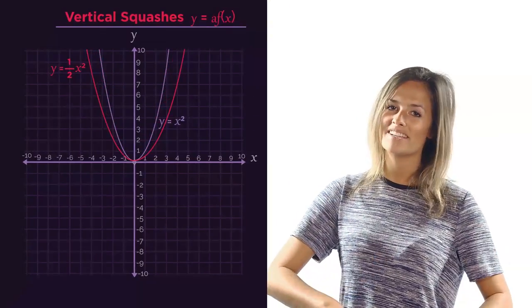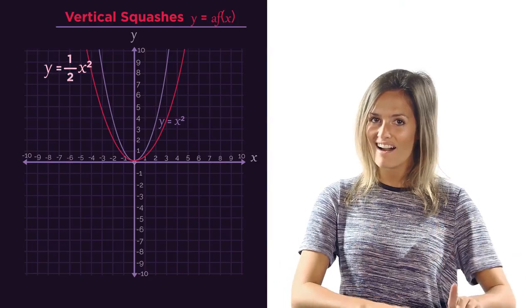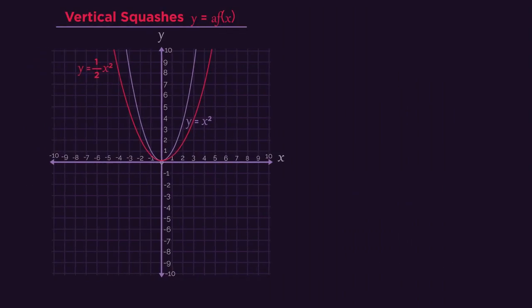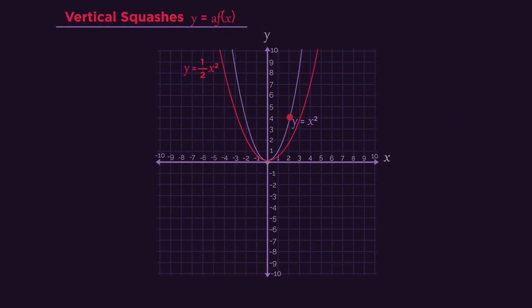See what happens when the equation is y equals a half x squared? The y-coordinates half in size, so 4 goes to 2.